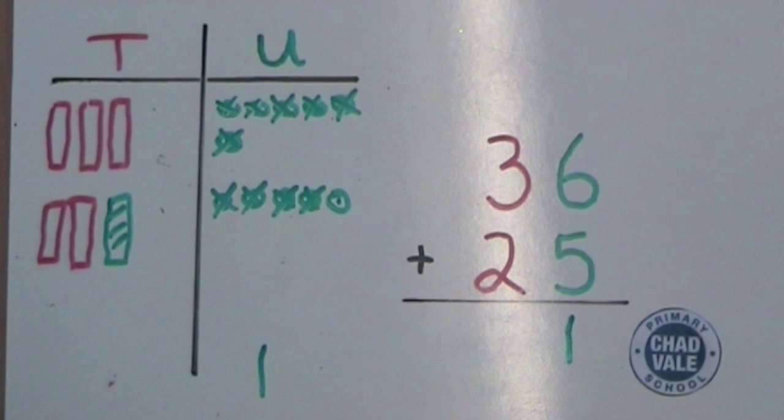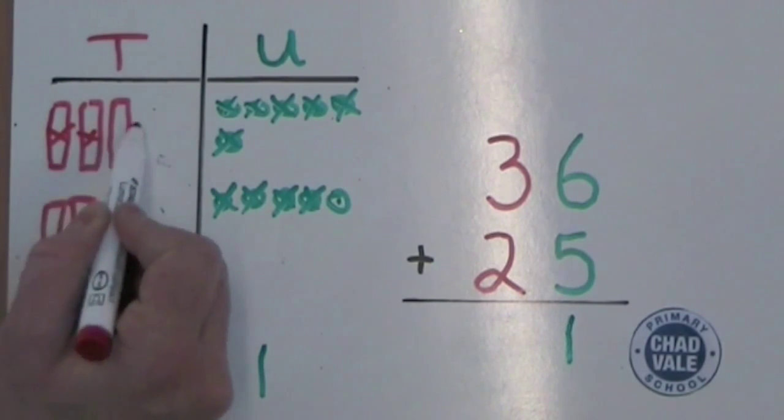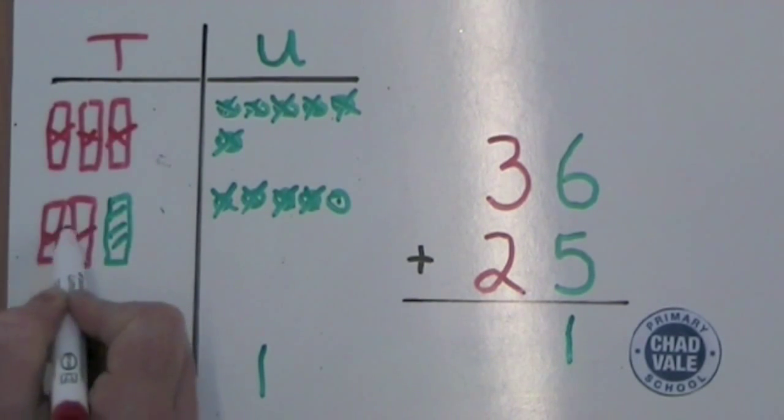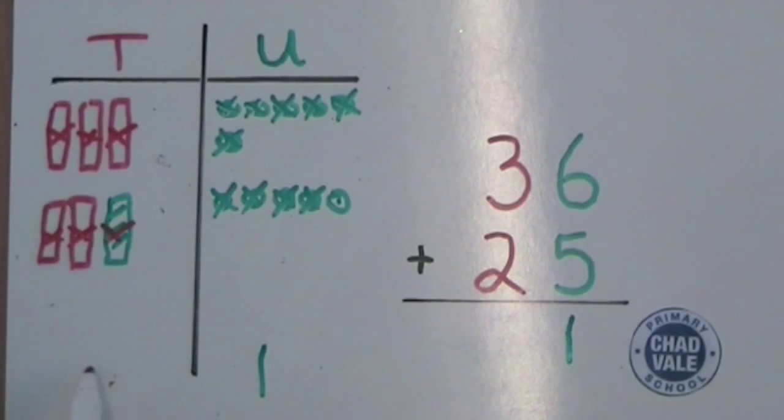We then need to add the tens. Three tens, add two tens. One, two, three, four, five, and now six tens. And draw that in the tens column.